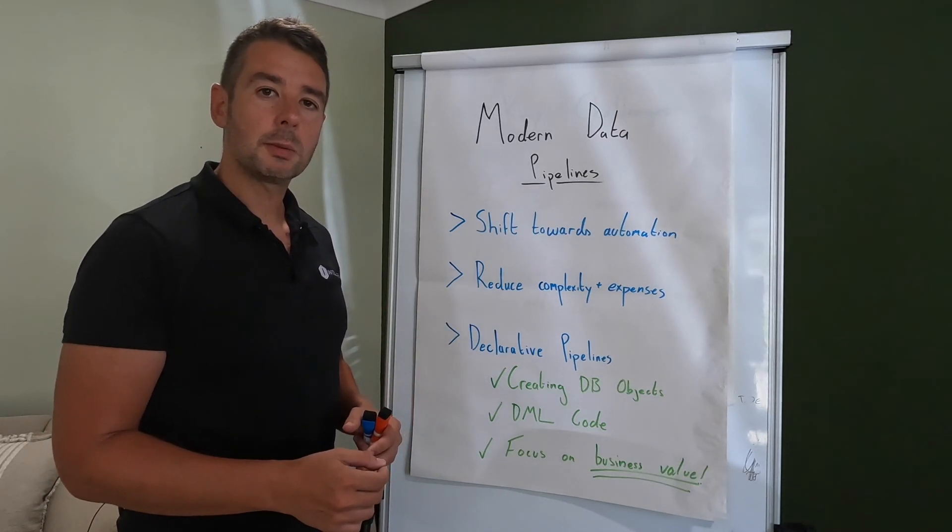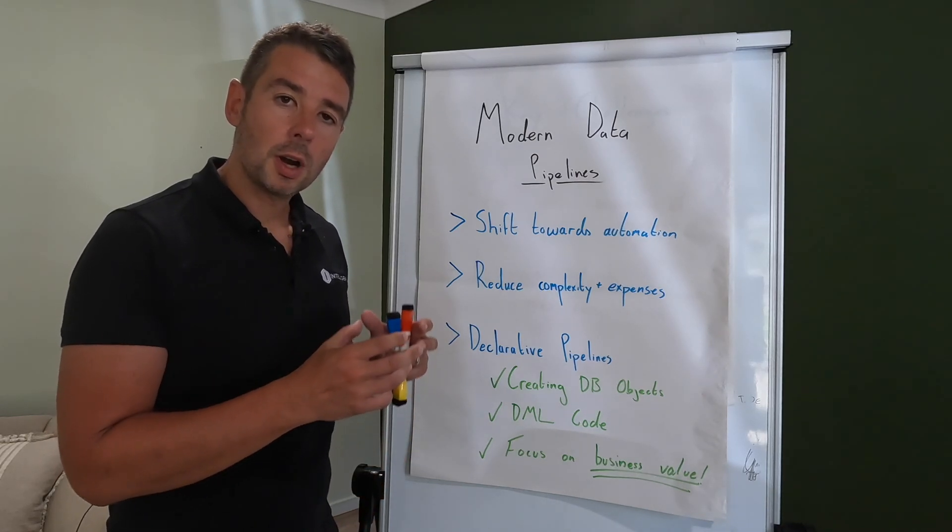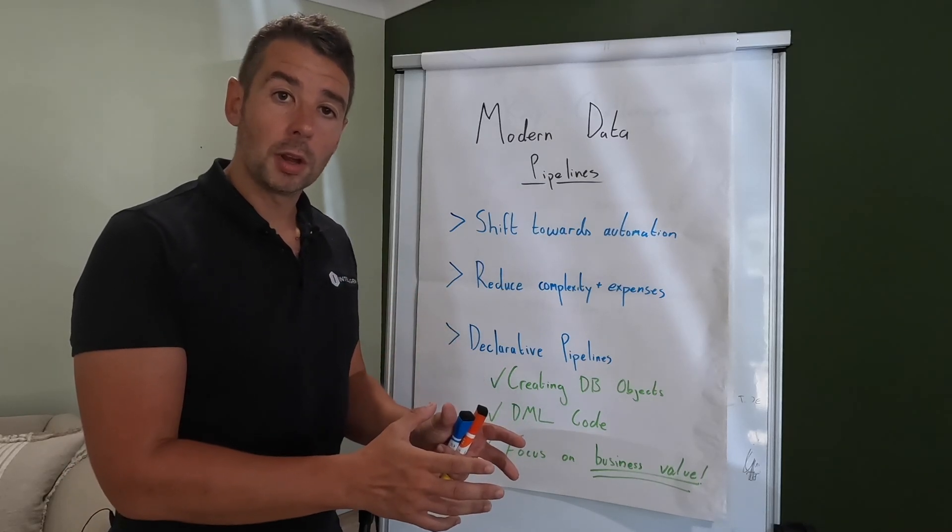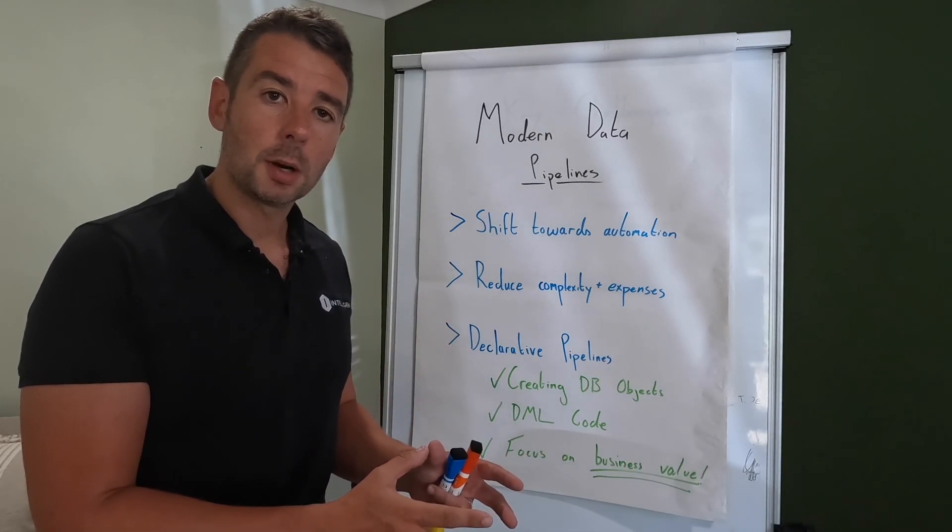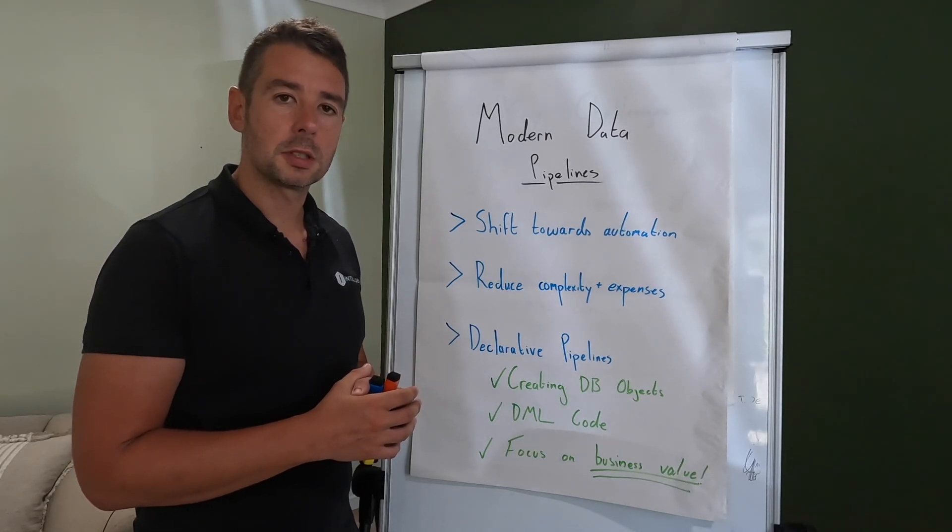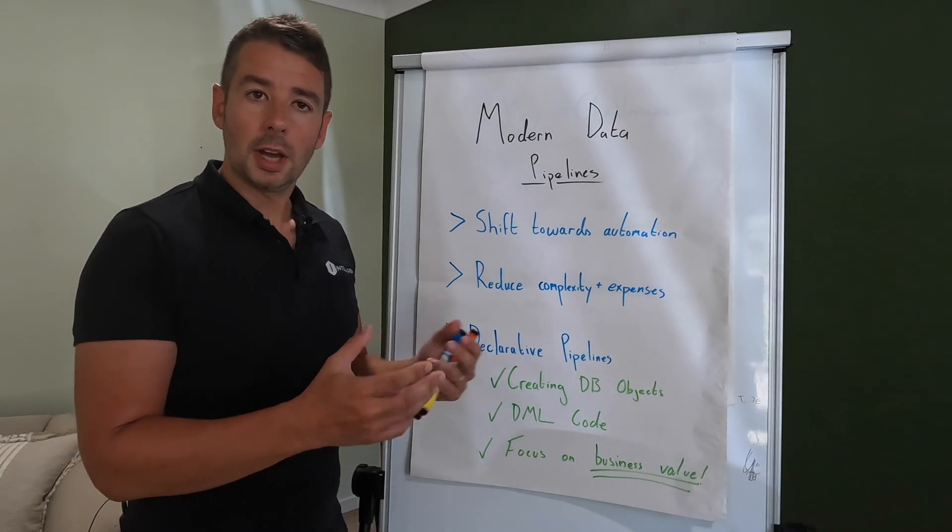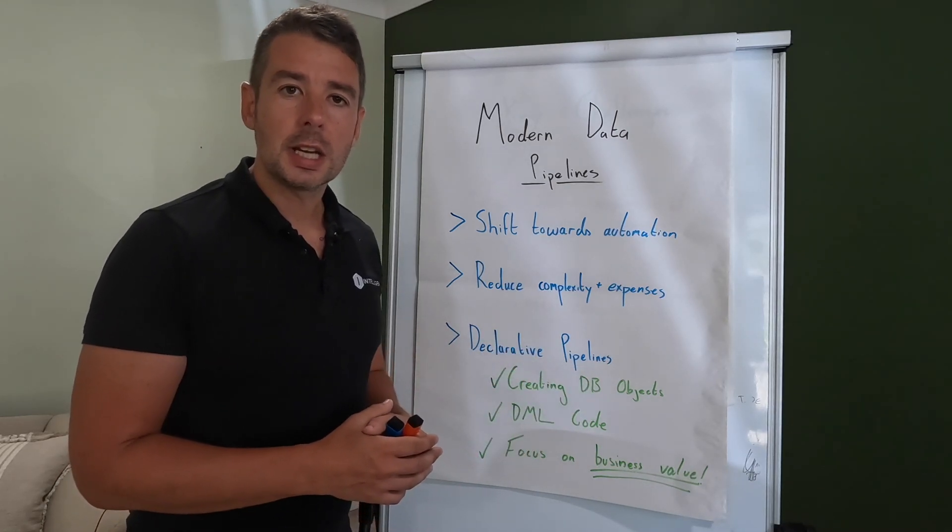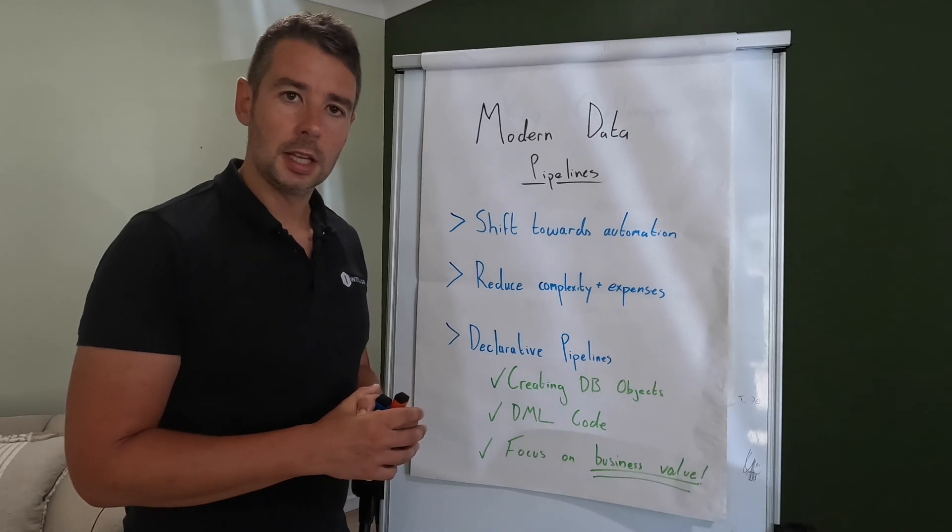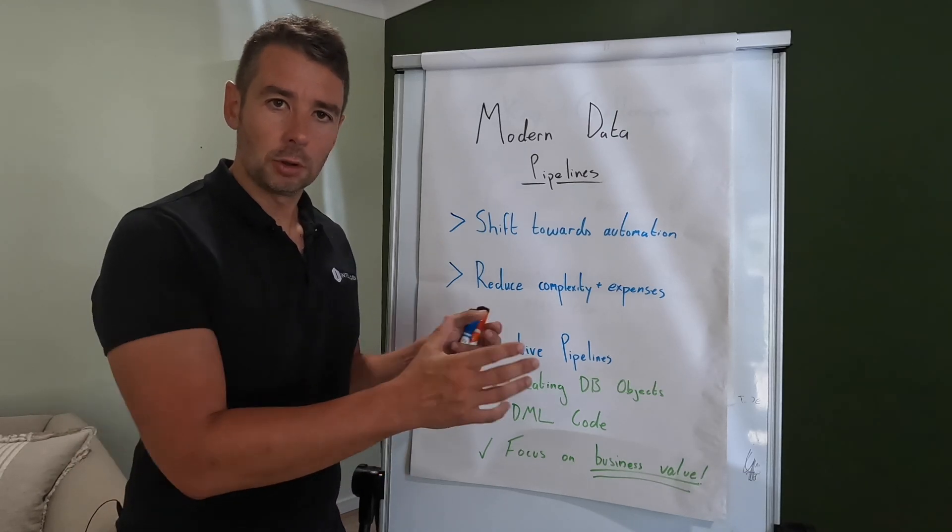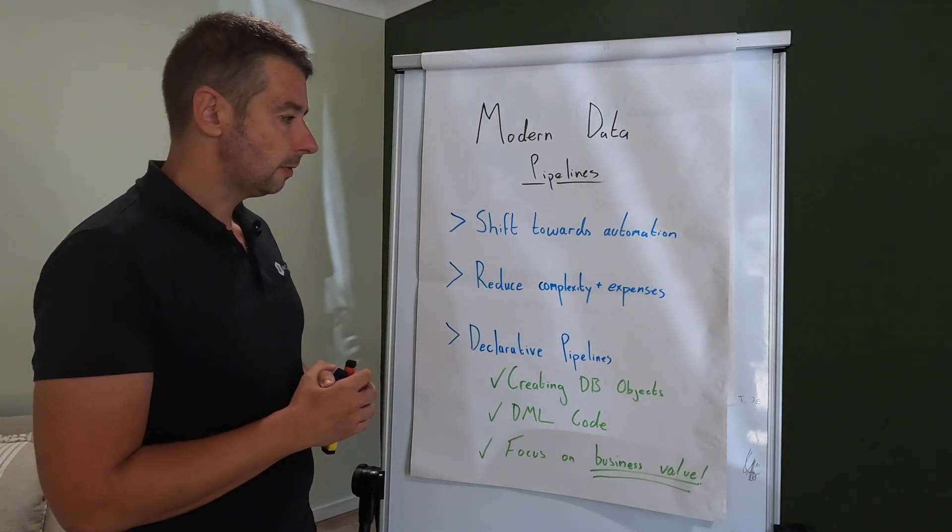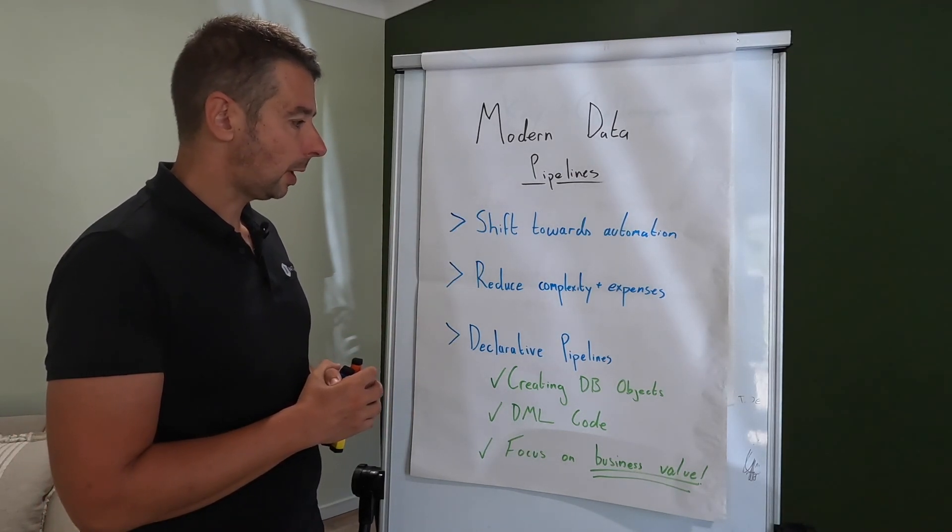So automation is everything and that goes right through from taking a requirement, building the initial code, automatically deploying that to a development or test environment, automatically running those tests and getting early feedback. That more holistically is known as CICD and there's a huge wealth of information out there in the public domain. Not something I'm going to cover in this video but essentially automation is where the move is heading with regards to pipelines.